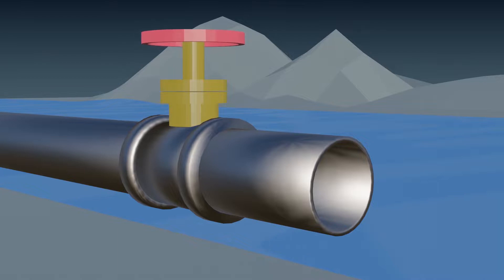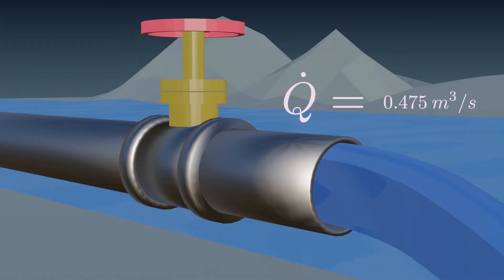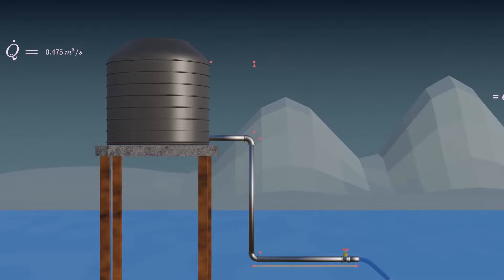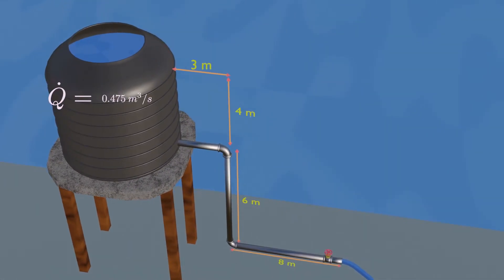When the gate valve is fully opened, the water will discharge at 0.475 cubic meter per second. We know the depth and the length of pipe. So we are designing pipe diameter for the given flow rate and the given length and height. Also, the pipe is made of galvanized iron.